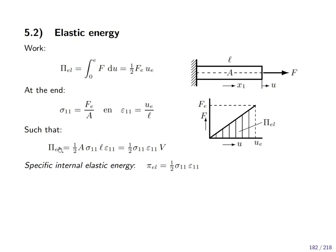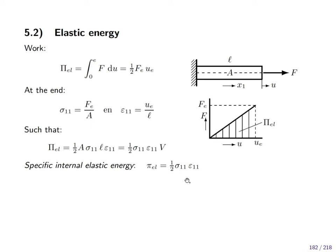If you divide the total work by the volume it disappears, and what we have is the specific internal elastic energy, designated as small pi in contrast to capital pi used before. That is just one-half stress times strain. This is true for the configuration where we stretch the bar in the one direction only. Next I will show how to do this for the full tensorial general configuration.